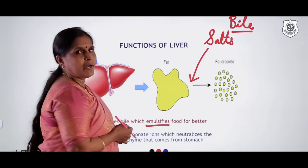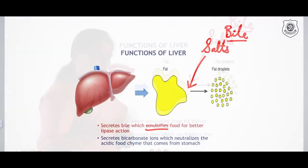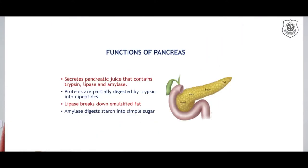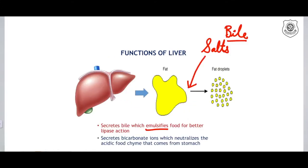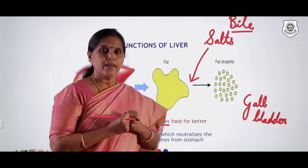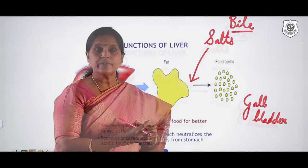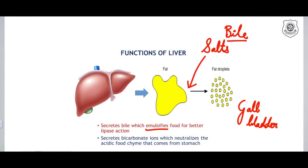Bile secreted by the liver is not poured directly into the duodenum. It is stored in a small muscular structure called the gallbladder. As and when required, bile is released from the gallbladder into the duodenum.